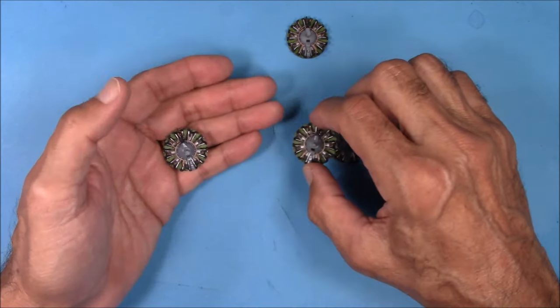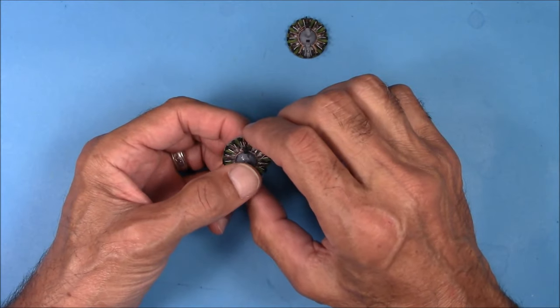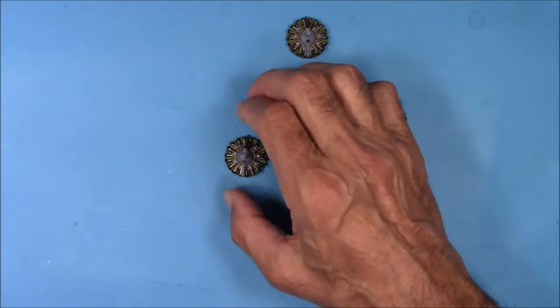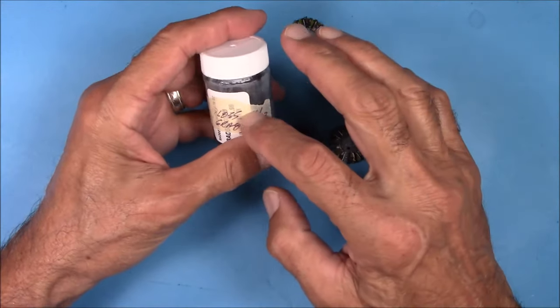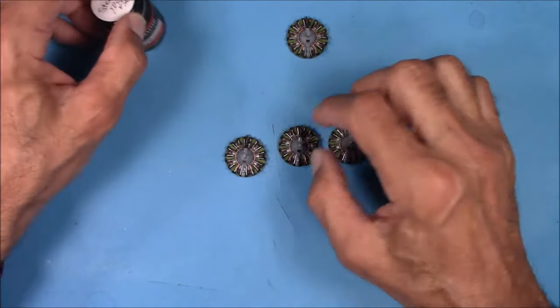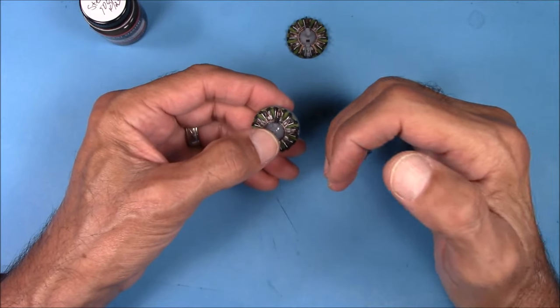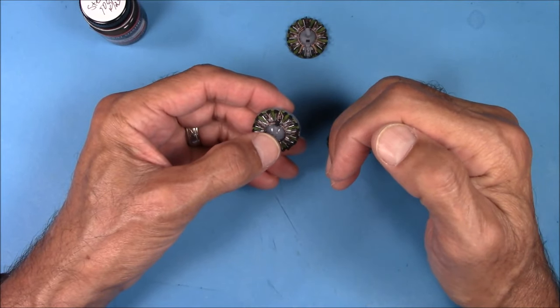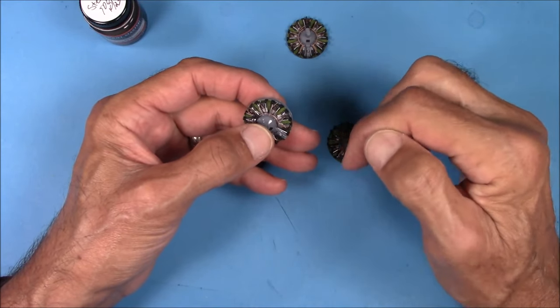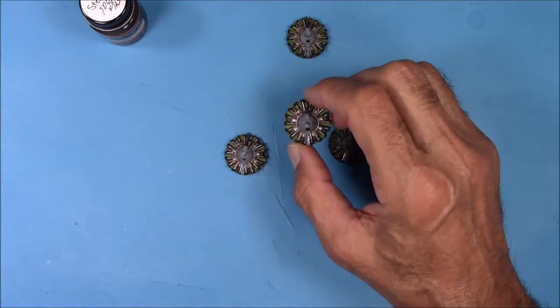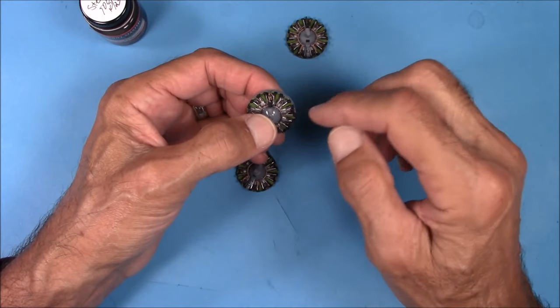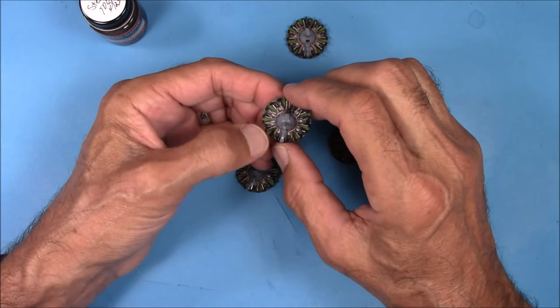But my only disappointment here is that the cooling vanes on these cylinders, I wish there was a little more relief to them because typically when you use gloss gray and then you use either the metalizer, non-buffing or buffing, this is really, really thin. And it typically seeps down inside between the cooling vanes to the cylinders and leaves kind of a two-tone effect.